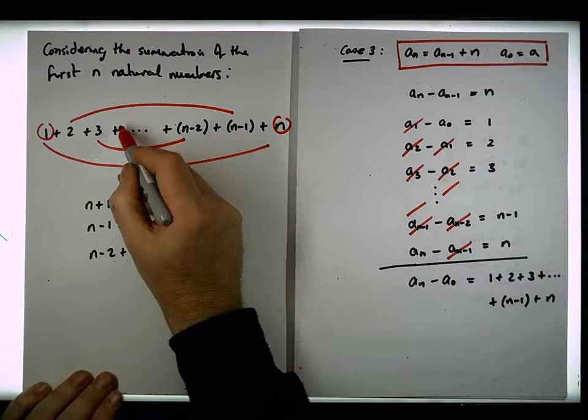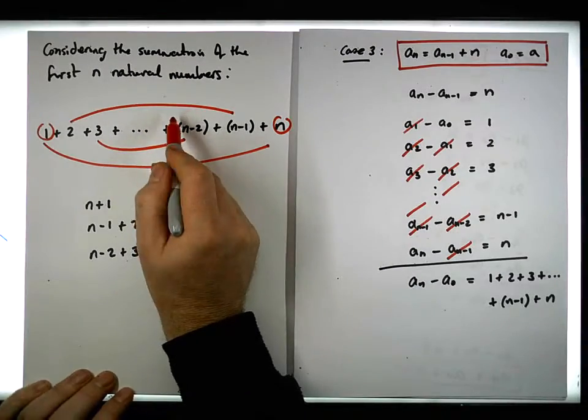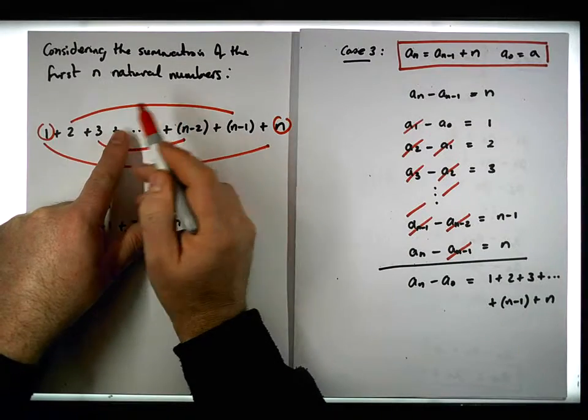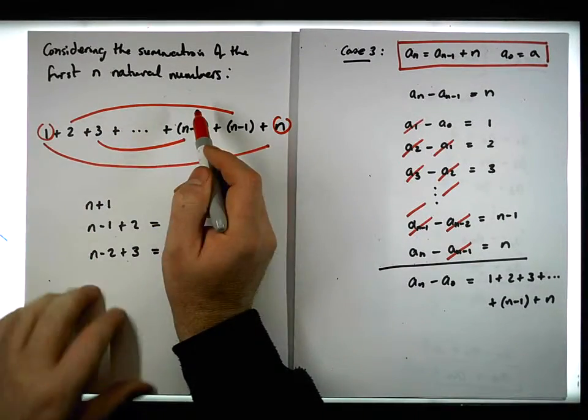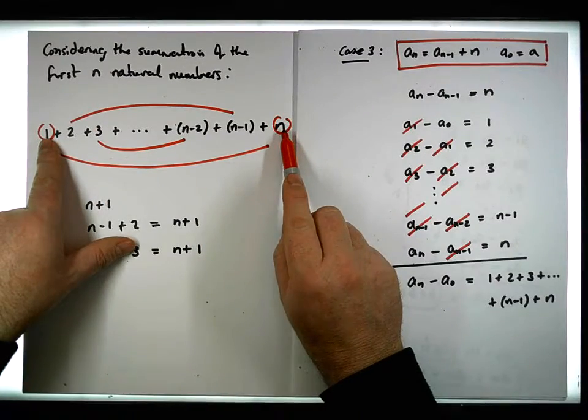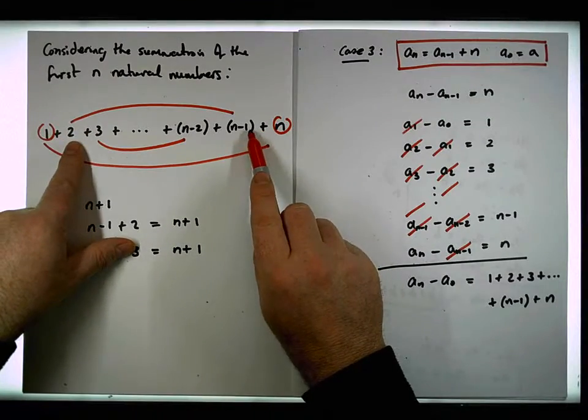We're going to continue to do this: add the fourth number to the fourth last, the fifth to the fifth last, the sixth to the sixth last, and so on. Effectively, what we're doing is pairing off the extremities of this particular series.